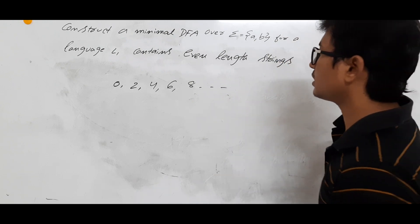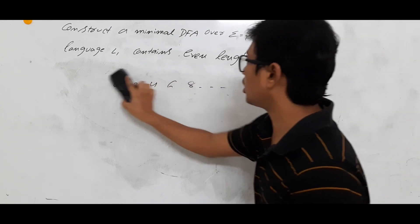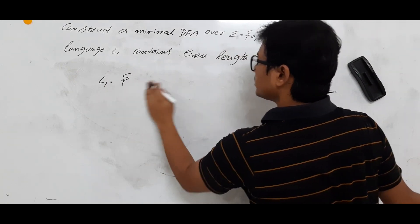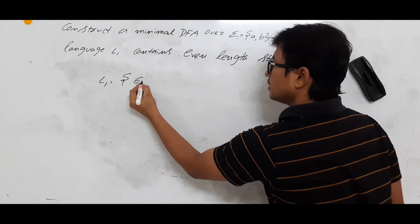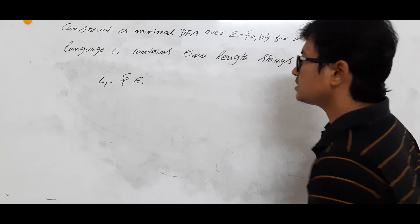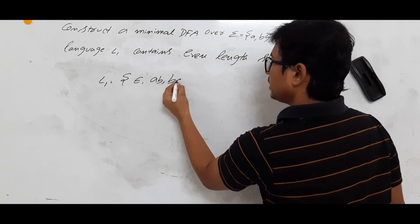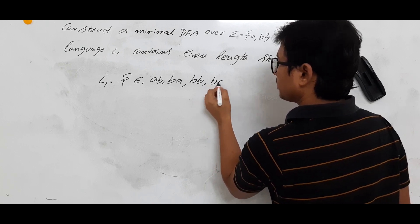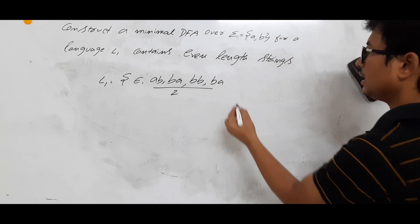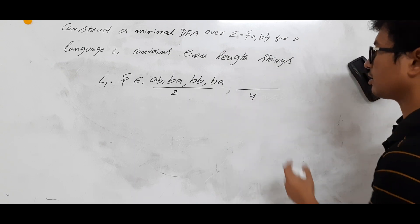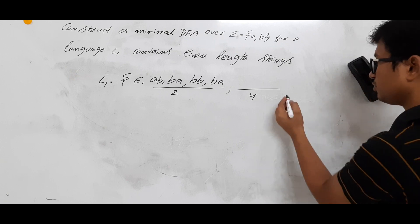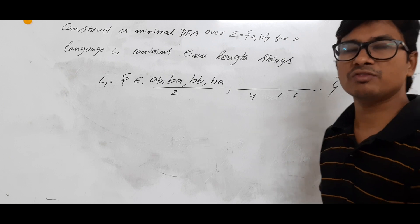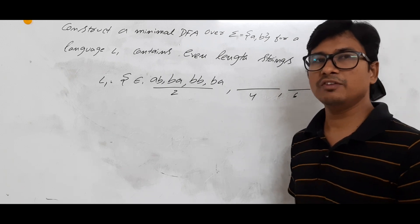We will check what strings belong to language L1. The string of length 0 is epsilon. Strings of length 2 include AB, BA, AA, BB, and so on. Then strings of length 4, length 6, length 8, and so on. So this is an infinite language.